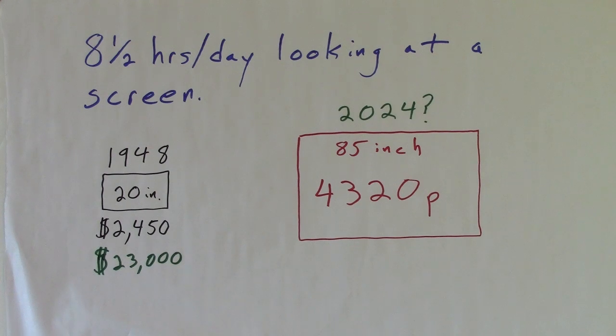According to one study, the average American looks at some type of screen 8.5 hours a day. In 1948, a fuzzy, wobbly 20-inch black and white TV was more than $23,000 adjusted with the CPI. You know what you can get today with less than 10% of that price.